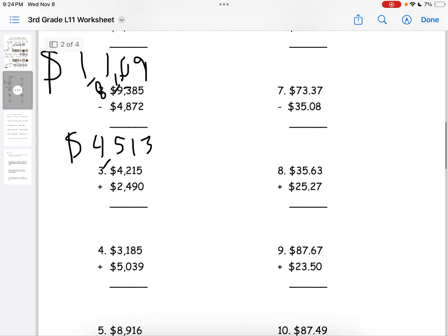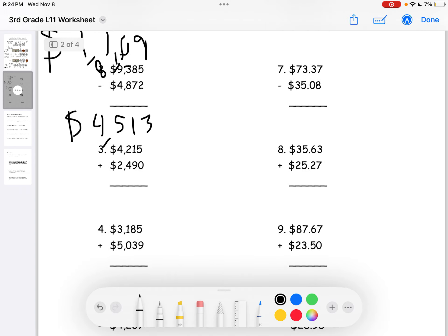We'll do question 3 here. $4,215 plus $2,490. 5 plus 0 is 5. 9 plus 1 is 10. So, 0 right here. 1 right here. 4 plus 2 is 6. Plus the 1 equals 7. 4 plus 2 equals 6. So, the answer to question 3 will be $6,705.